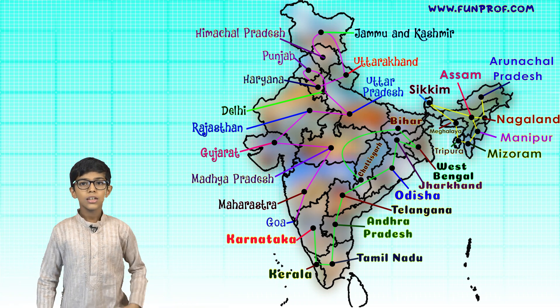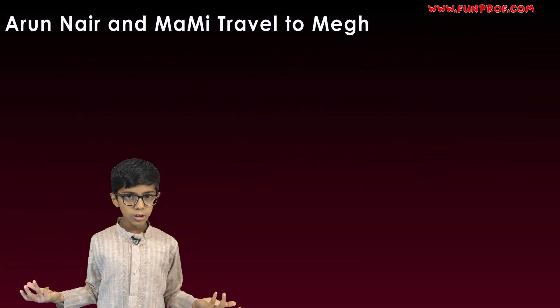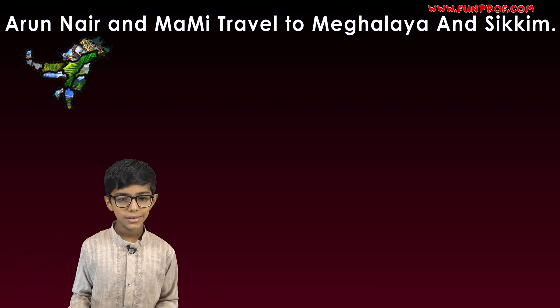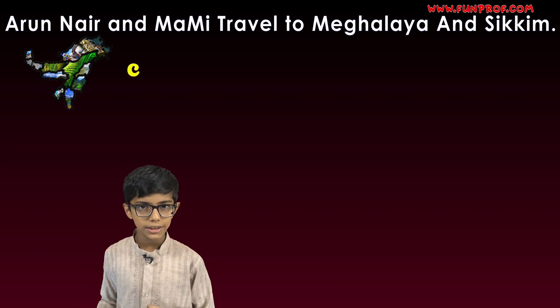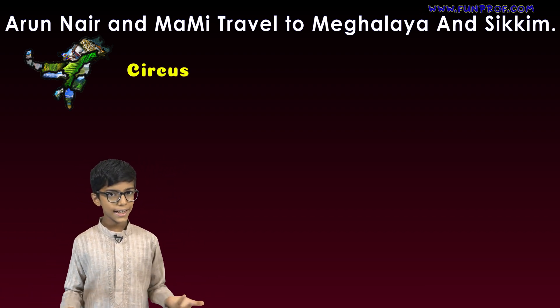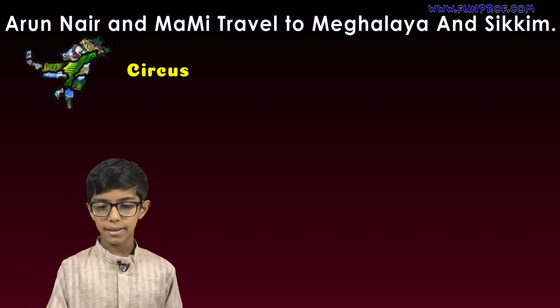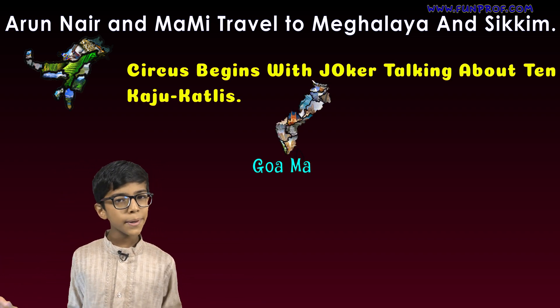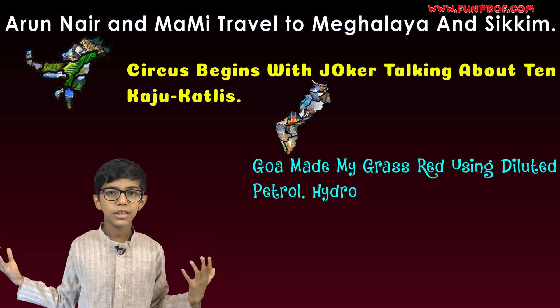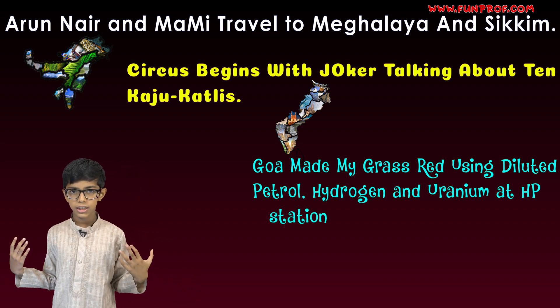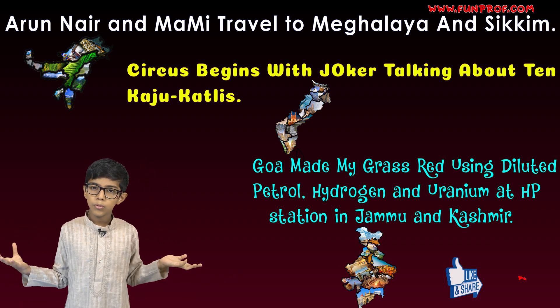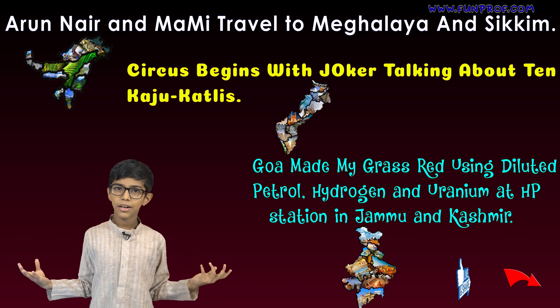Let's say all three mnemonics again. First: Arun Nair and Mami travel to Meghalaya and Sikkim. Second: Circus begins with a joker talking about ten kajukatlis. Third: Goa made my grass head using diluted petrol, hydrogen and uranium at HP station in Jammu and Kashmir. If you have any doubts or mnemonics to share, you can share with us. Bye, have a nice day.